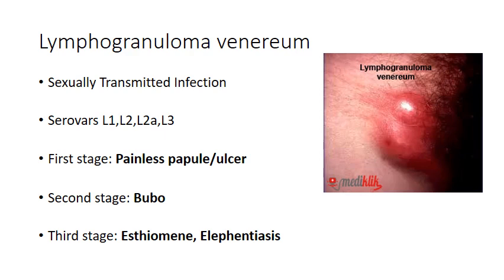Chlamydia trachomatis is also known to cause lymphogranuloma venereum, one of the sexually transmitted infections, which is caused by the serovars L1, L2, L2A and L3. It is an invasive systemic sexually transmitted infection. There are three stages in lymphogranuloma venereum. In the first stage, a painless papule, ulcer or vesicle develops on the penis or vulva after an incubation period of 3 days to 6 weeks.